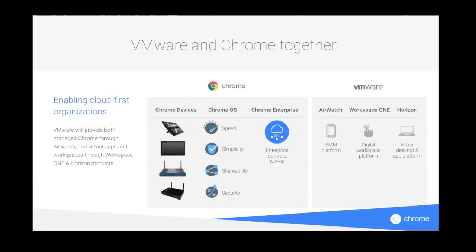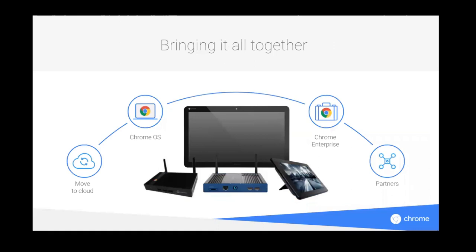Chrome OS is always evolving, and this is just another feather in the cap with regards to its trajectory in the enterprise space. To bring it all together: we are focused on companies moving to the cloud. We've built a cloud-based operating system in Chrome and are continuing to evolve our story within the enterprise space with our Chrome Enterprise license and offerings. Valued partners like AOpen will continue to make wonderful devices that keep businesses moving forward. Thank you so much for your time.